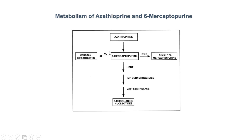Now why mention these two enzymes if they don't lead to immune suppression? The reason is that when a patient comes into the hospital with gout — increased levels of uric acid — they will probably be on a medication called allopurinol. Allopurinol will inhibit xanthine oxidase and therefore shunt 6-mercaptopurine down the main pathway.